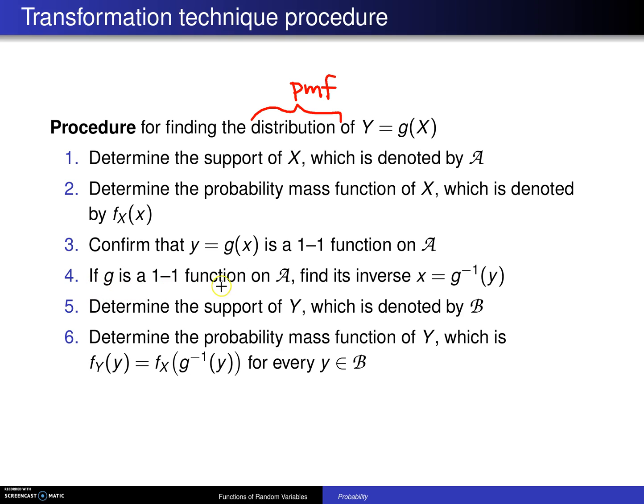If g is a one-to-one function on script A, then what you want to do is find its inverse. Why are we finding its inverse? Because we're going to use the inverse down here.